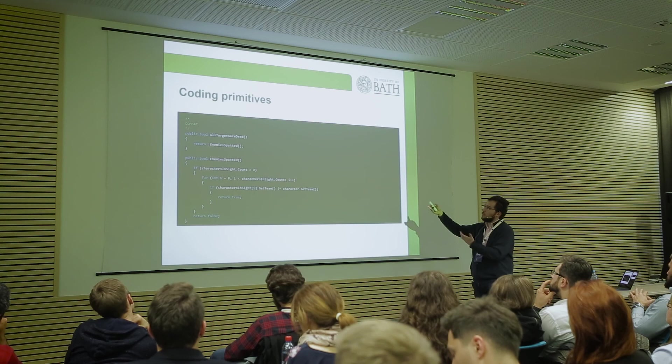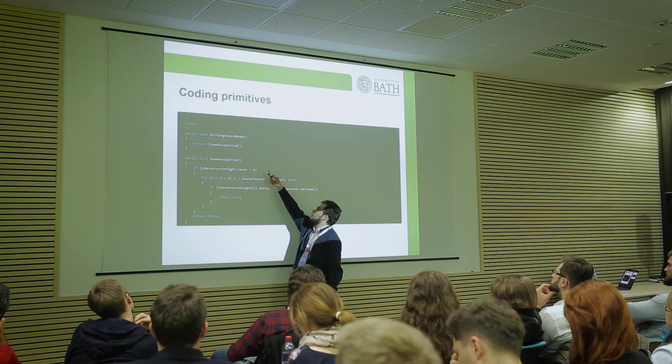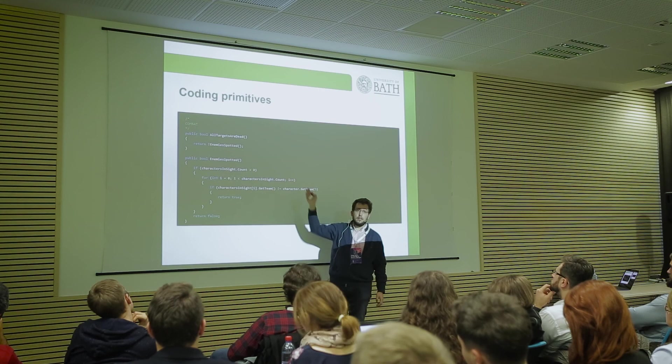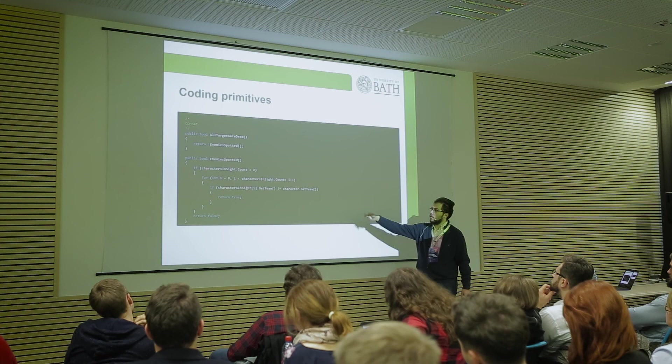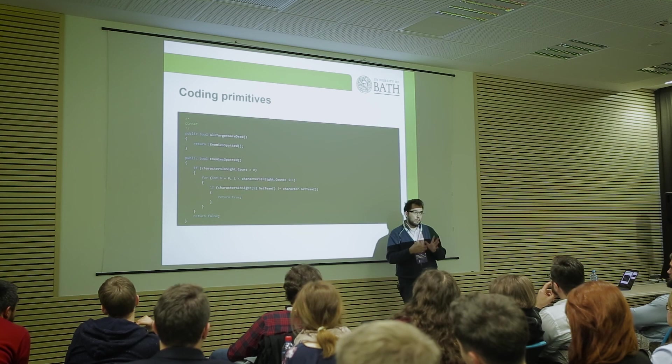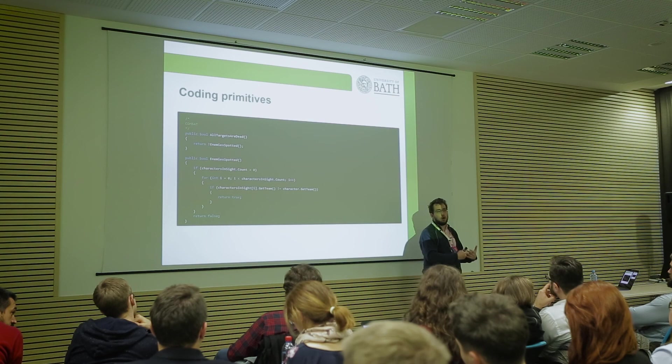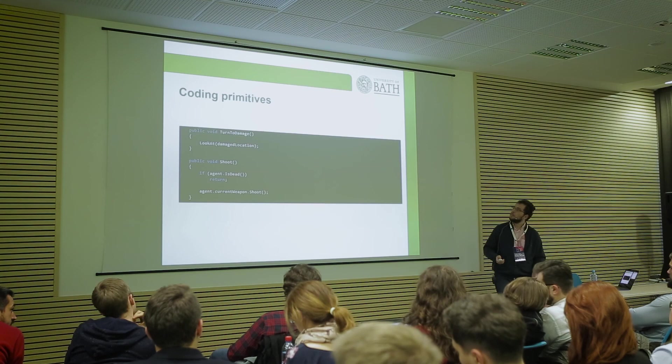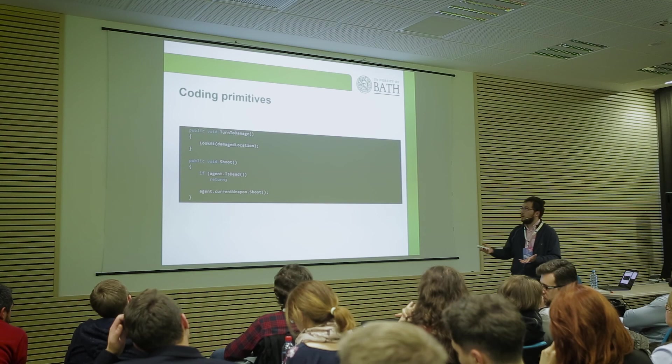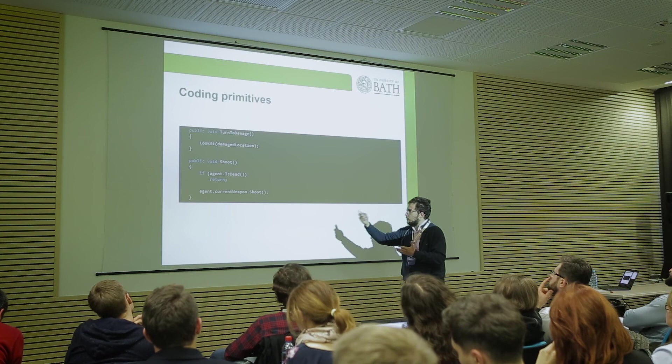Going back to primitives — here are simple examples of sense values. One is 'all targets dead,' which just returns a Boolean: are there any enemies still spotted or not? Or 'if I have any enemies spotted,' returning whether I see enemies. These are simple blocks of code, really simple to implement. Once you implement them once, you can use them all over your plan by just referring to them by name. And then you have the actions — same thing: 'turn to damage' or 'shoot,' for example.